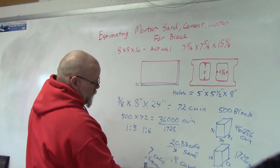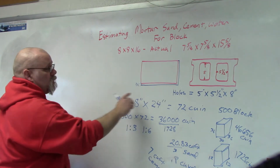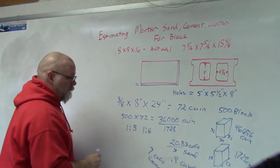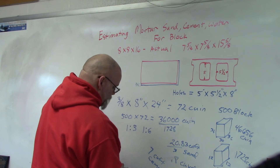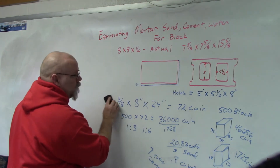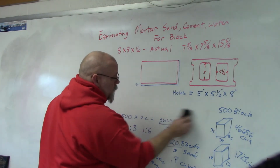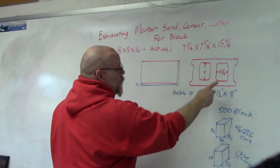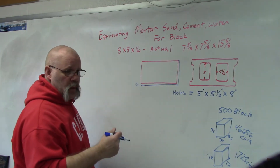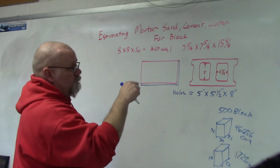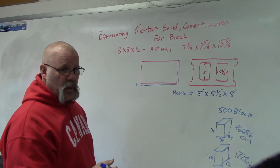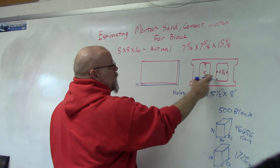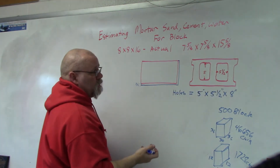This calculation covers just the bed joints and the head joints. Now, what if you wanted to reinforce your wall? Every third or fourth hole you're going to fill full of mortar and then stick a piece of rebar in there. So now you have to figure out how much mortar it's going to take to fill in each one of those holes.